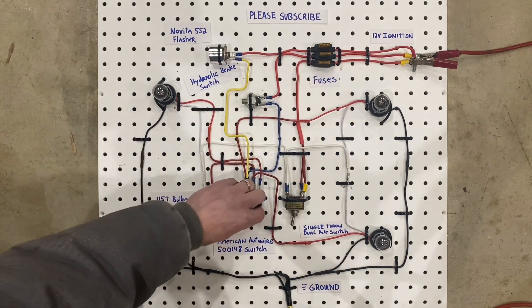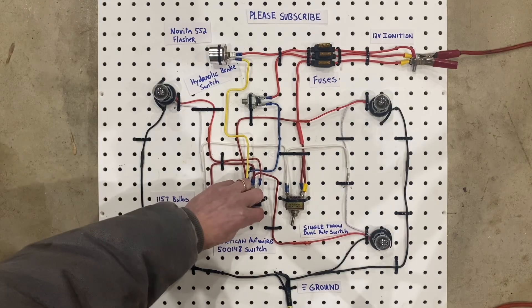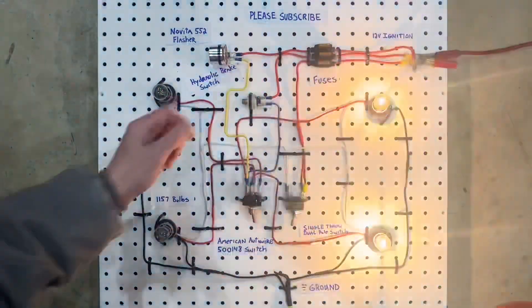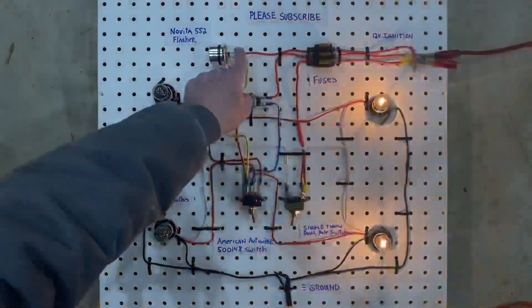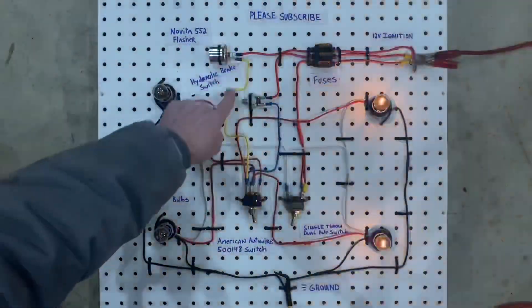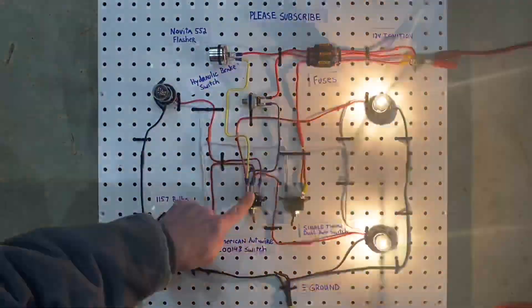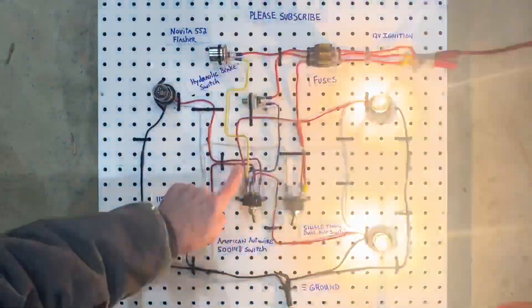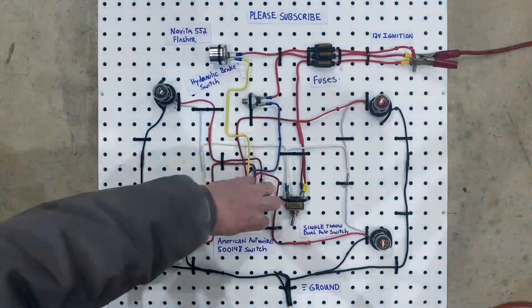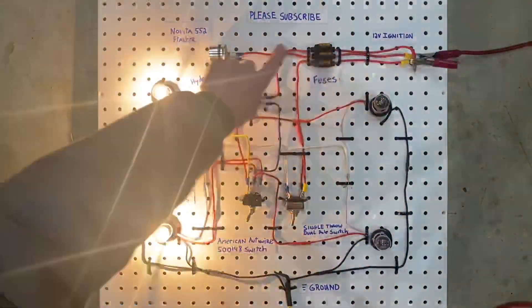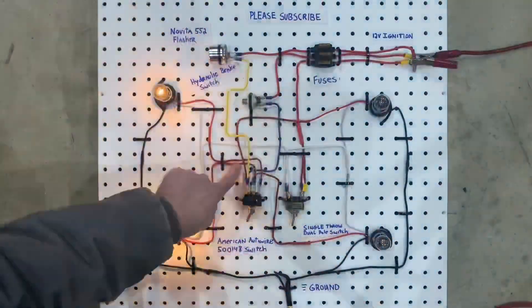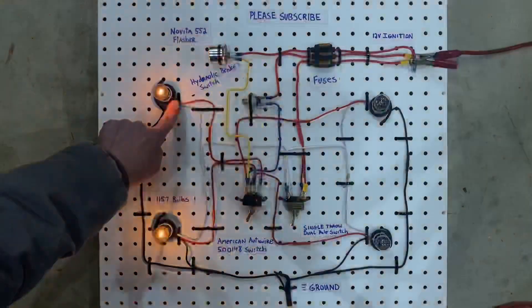Let's just do a little example. Right now we have the right turn signals on. What's happening is you have power coming through here, going through the turn signal flasher, through the yellow wire, and then it goes out this red wire and out that red wire. And then as soon as we swap it to the other side, you have power coming in the flasher, through the yellow wire, and then out the red wire here and out the red wire here.